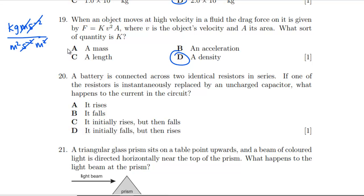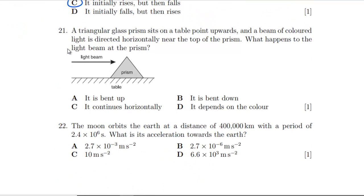Question 21: A triangular glass prism sits on a table point upwards. A colored beam of light horizontally hits the top of the prism. What happens to the light? It's going to bend towards the normal because it's going into something more dense. So it's going to bend downwards. Doesn't depend on the color, that just depends on how much it gets bent down.